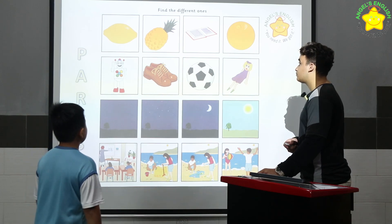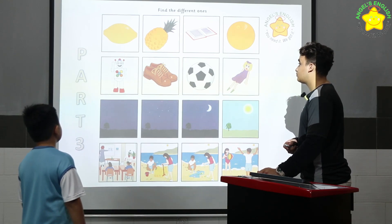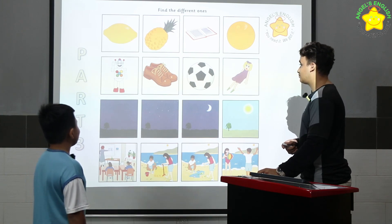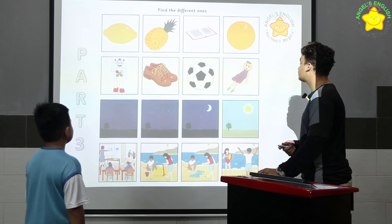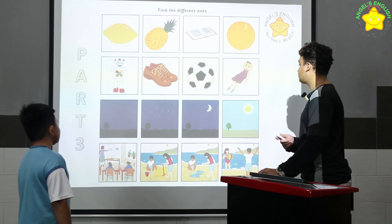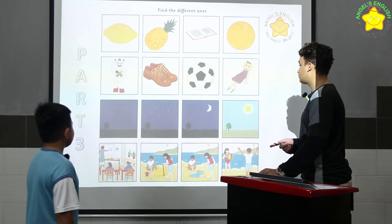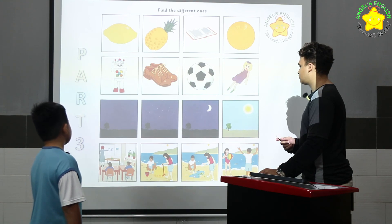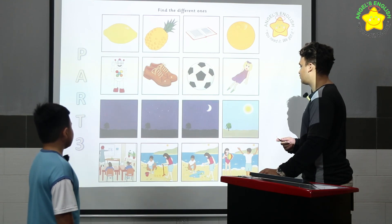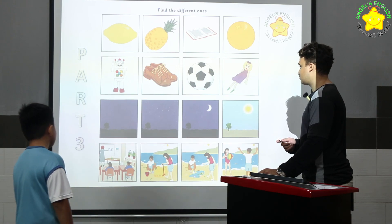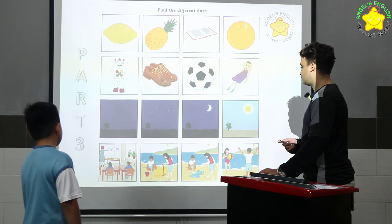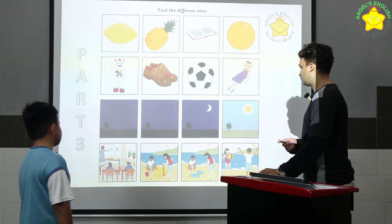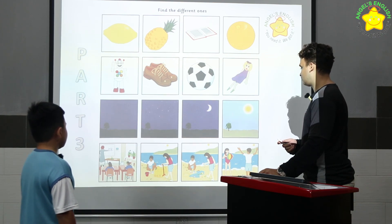In row two, the boy is different because the robot, ball, and dog are all toys. In row three... in row four, it's different because in picture one, two, three — eight and nine. In picture four, in picture one, it's different because in picture two, three, four at the pitch.